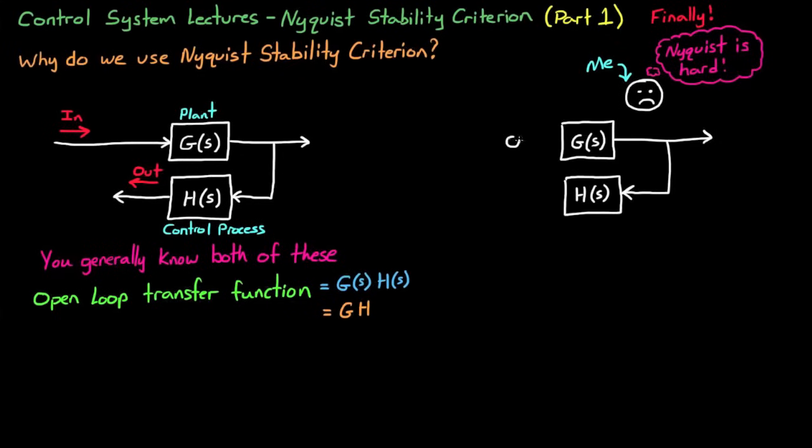When we close the loop, this physically adjusts the transfer function for the entire system, and you can reduce the block diagram into a closed-loop transfer function G divided by 1 plus GH.